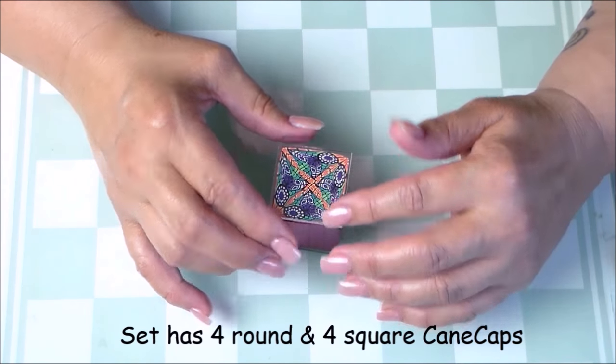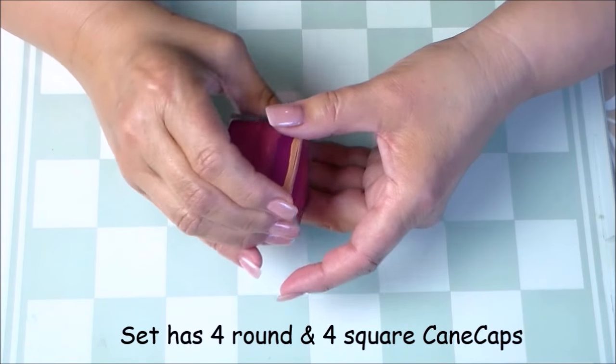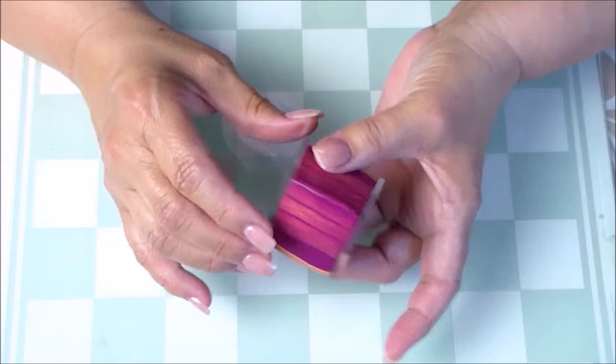You pop them on the ends like this and you create suction just by squeezing it like this. You'll be surprised how tight those are on there. They're really not going to come off easily.